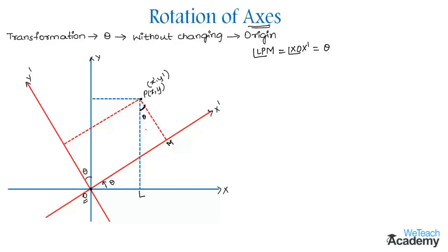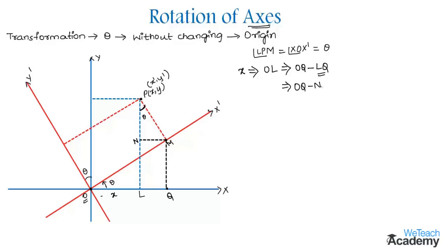Now let N be the foot of the perpendicular drawn from M to PL. To find x — the coordinate of point P — which equals the length OL. So OL can be written as OQ minus LQ, and replacing LQ with MN, we get OQ minus NM.